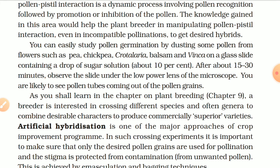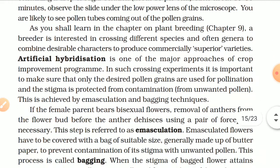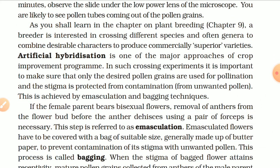As you shall learn in the chapter on plant breeding, a breeder is interested in crossing different species and often genera to combine desirable characters to produce commercially superior varieties. Artificial hybridization is one of the major approaches of crop improvement programs. In crossing experiments, it is important to make sure that only the desired pollen grains are used for pollination and the stigma is protected from contamination from unwanted pollen. This is achieved by emasculation and bagging techniques. If the female parent bears bisexual flowers, removal of anthers from the flower bud before anther dehiscence using a pair of forceps is necessary — this step is referred to as emasculation.